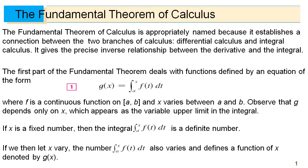So f is going to be a continuous function, continuous on the interval a to b. X is going to be some variable, some value that varies between a and b. And we can observe that g of x is a function of x because it depends solely on x, which here is just the upper limit of our integral.